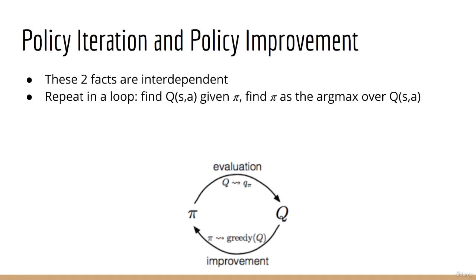Well it turns out that these two facts are interdependent. Given a policy, we can find its corresponding action value. And from that, we can take the argmax to find a possibly better policy. But what if this policy is different from the original policy? Then we can find the value function for this new policy. And from that, we can take the argmax again, to find yet another new and possibly better, but at least as good policy. From there, we can find the value function again. So you see, this is just a loop, where we go back and forth, finding the value function given a policy, and improving the policy given that value function.